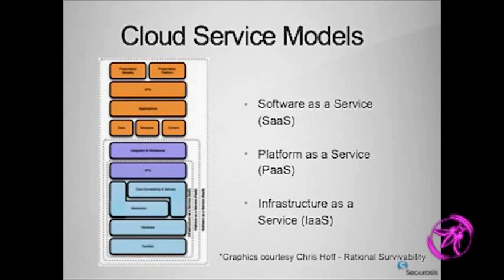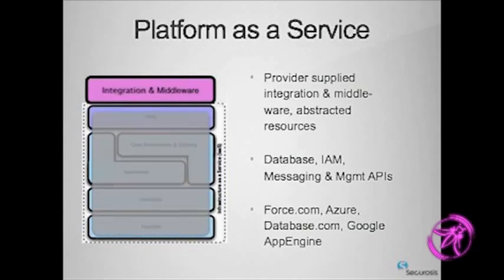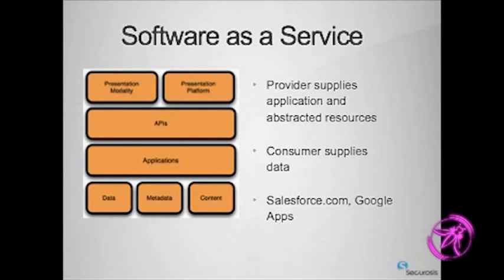Chris Hoff did a cloud taxonomy a couple of years ago called 'The Frogs Who Desire to King' — it breaks down the taxonomy brilliantly with examples. You're going to be hearing a lot about infrastructure as a service in this presentation. Examples include Amazon EC2, Rackspace, and GoGrid — you assemble infrastructure as you need it. Platform as a service usually involves some application layer — things like database as a service, database.com, or SQL Azure, which should be considered PaaS because it's operating system, database, application, APIs, and messaging queues. Software as a service: I doubt anybody here will be programming for that model.